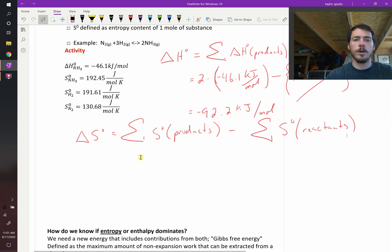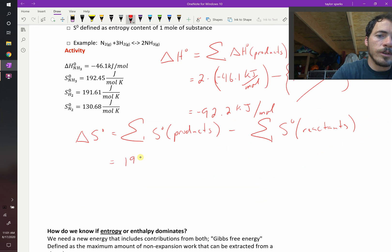So just like before, we're going to products minus reactants. In this case, the entropy of NH3, that's going to be equal to 192.45, and that's times two moles.